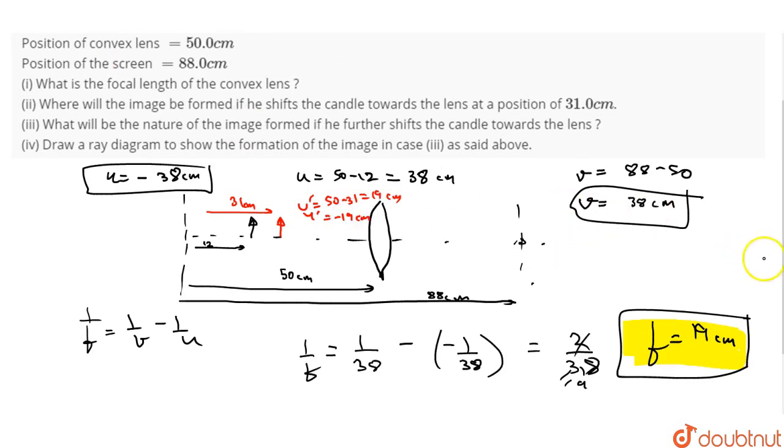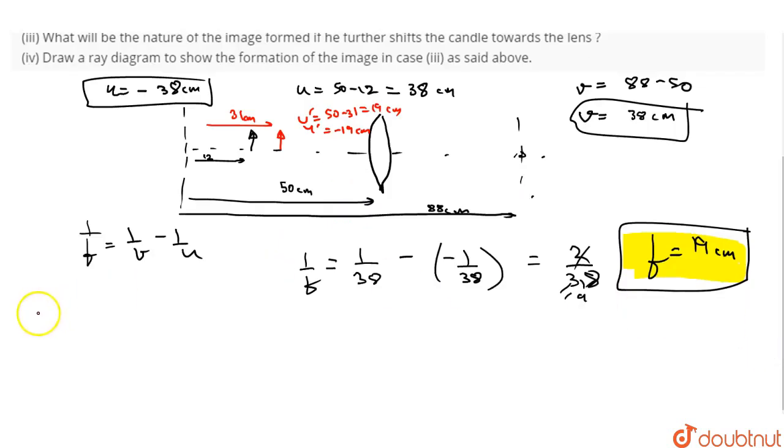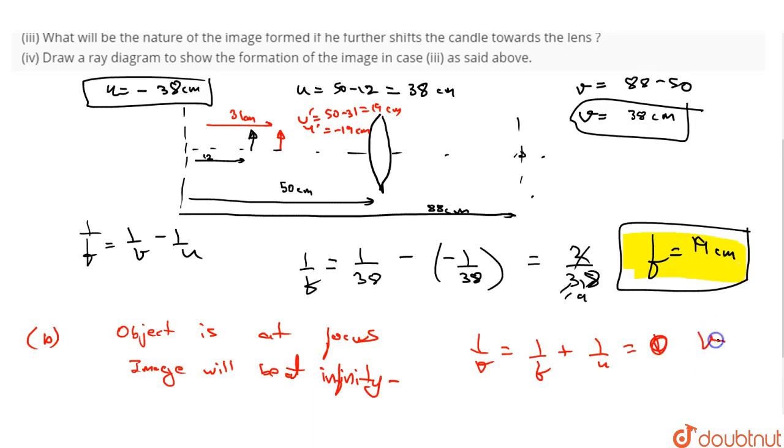Now we will find the image. The object is at focus. The image will be at infinity. This is a simple case, a special case. When object is at focus, image is at infinity. We can verify using lens formula. If we find 1 by v, when u is minus f, then 1 by v is 0. That means v is infinity.